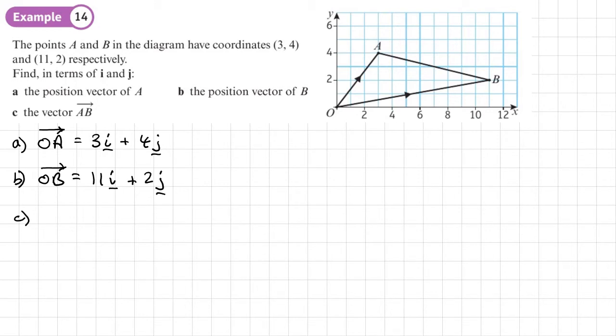And then part C, the vector AB. OK, so basically, how do we get from A to B? So to get from A to B, we know from what I showed you previously, this would be OB minus OA. Or we can do it from scratch and say we're going from A to O. So that's negative OA plus OB. So that's the same as what we said before. OB minus OA. Now we've got both of these.